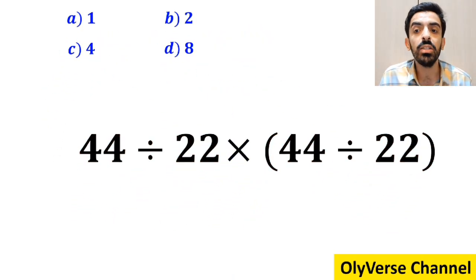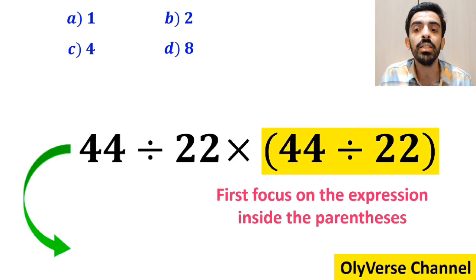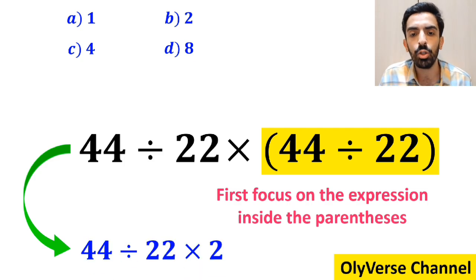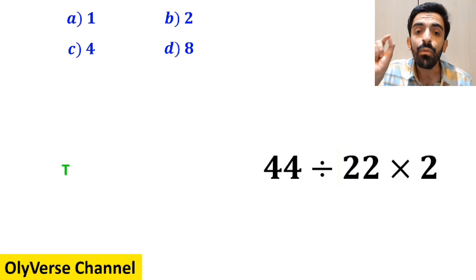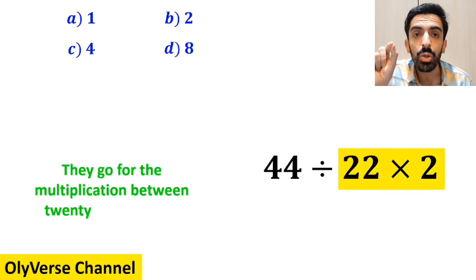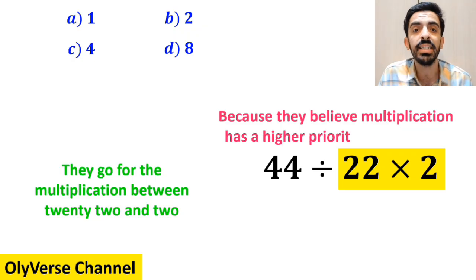Many people when starting to solve this question first focus on the expression inside the parenthesis and instead of considering the whole expression they rewrite it as 44 divided by 22 multiplied by 2. In the next step they go for the multiplication between 22 and 2 because they believe multiplication has a higher priority than division.